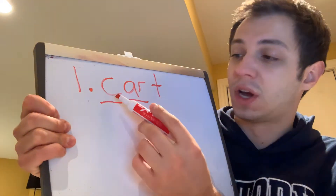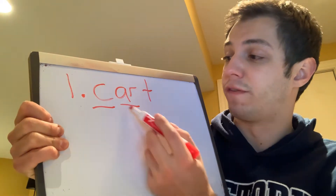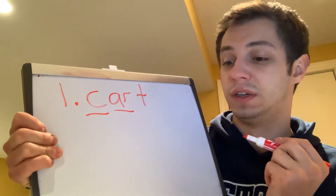So our first word is the word 'cart.' Get ready? Write cart. Let's spell it: C-A-R-T. So word one is the word cart. It has the K sound but it's spelled with the letter C. We have our favorite pirate sound which is R, and then we have T.